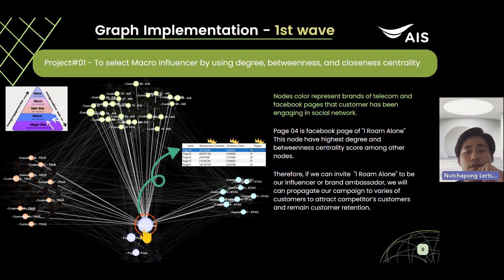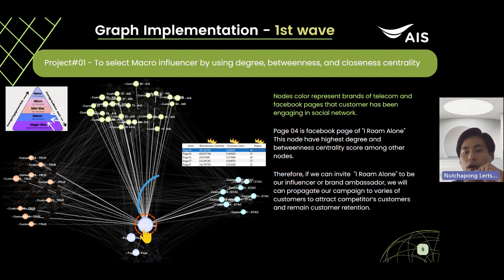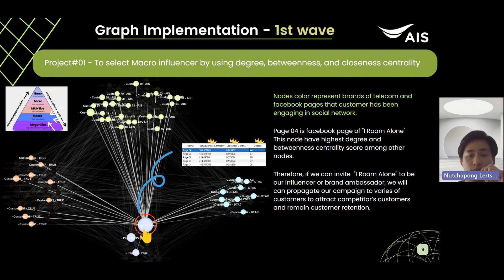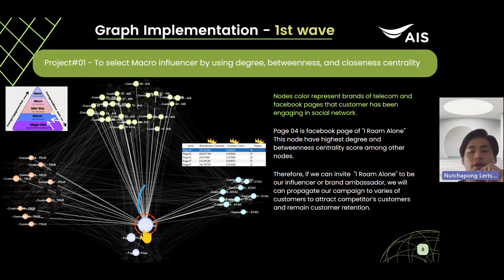This graph has shown that page number four had the highest number of degrees, betweenness, and closeness centrality score among the other nodes. This means this page has a lot of connections. Furthermore, it can communicate to another community and provide the fastest information flow. Therefore, we will focus on inviting the page 'iRoam Alone' to be our brand ambassador, so we can propagate our campaign to each type of customer.